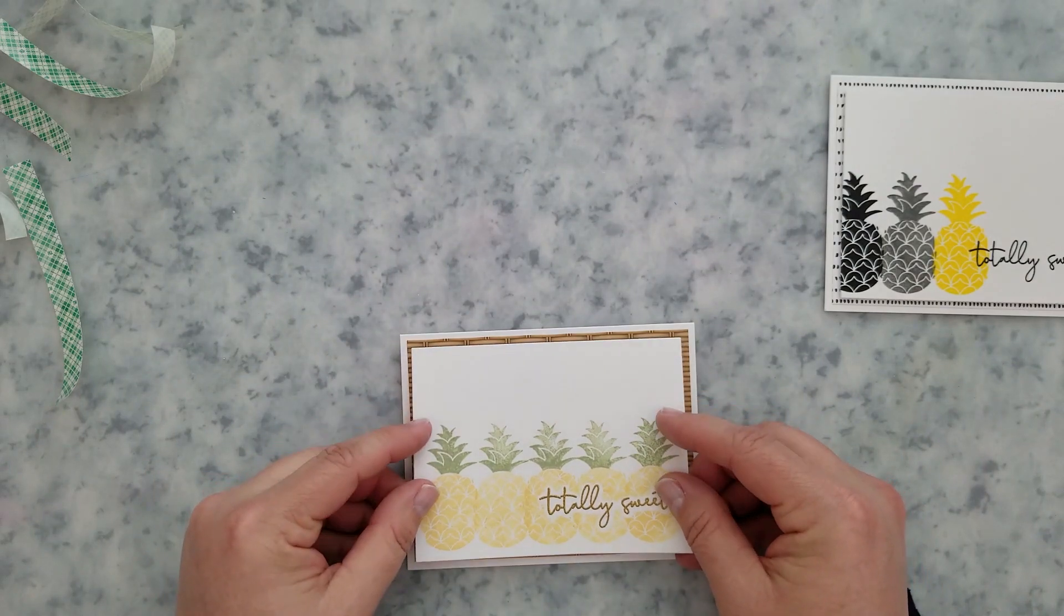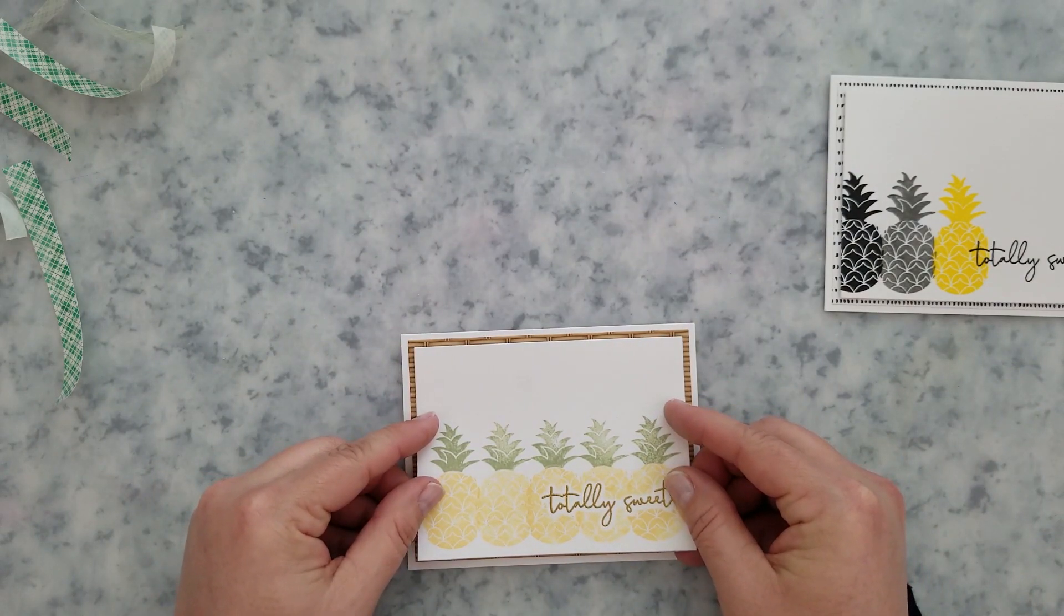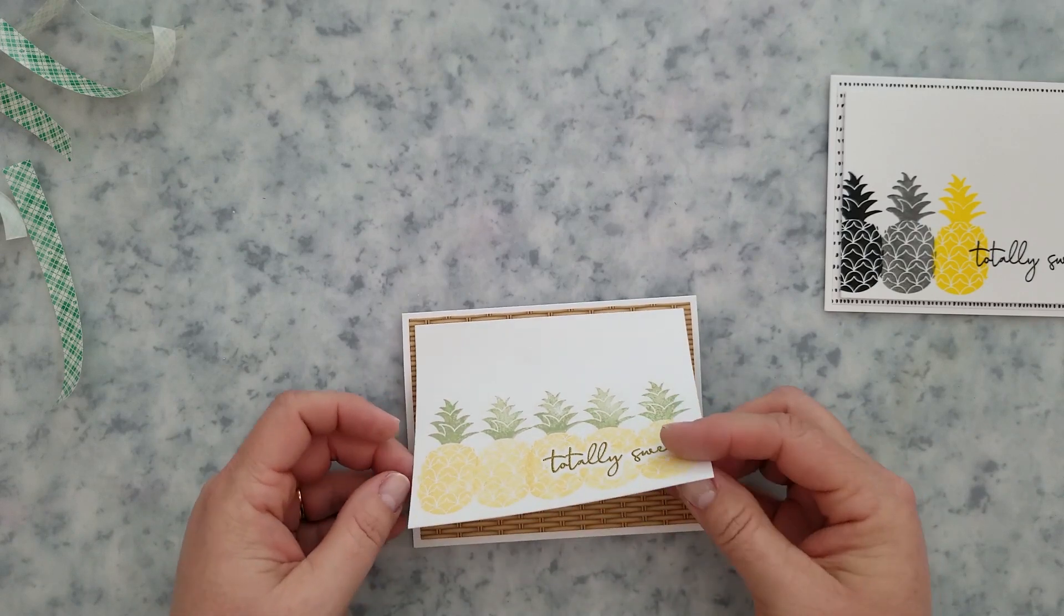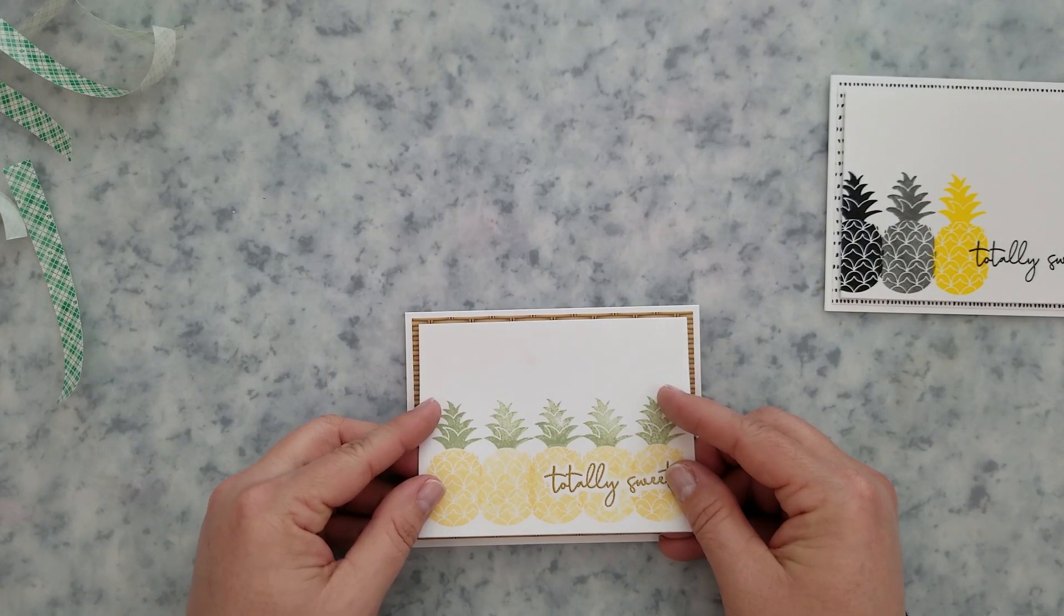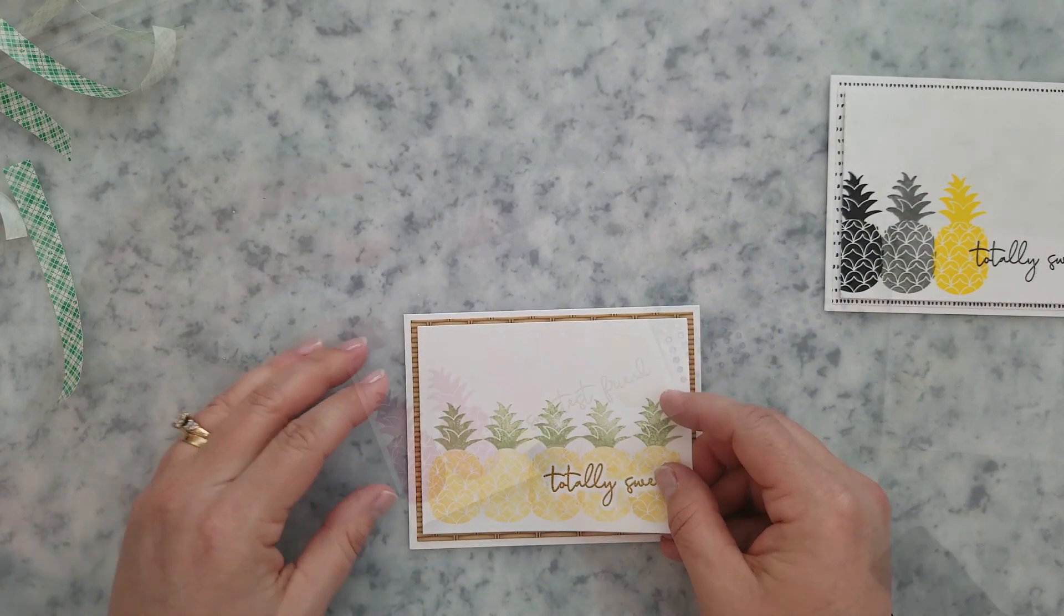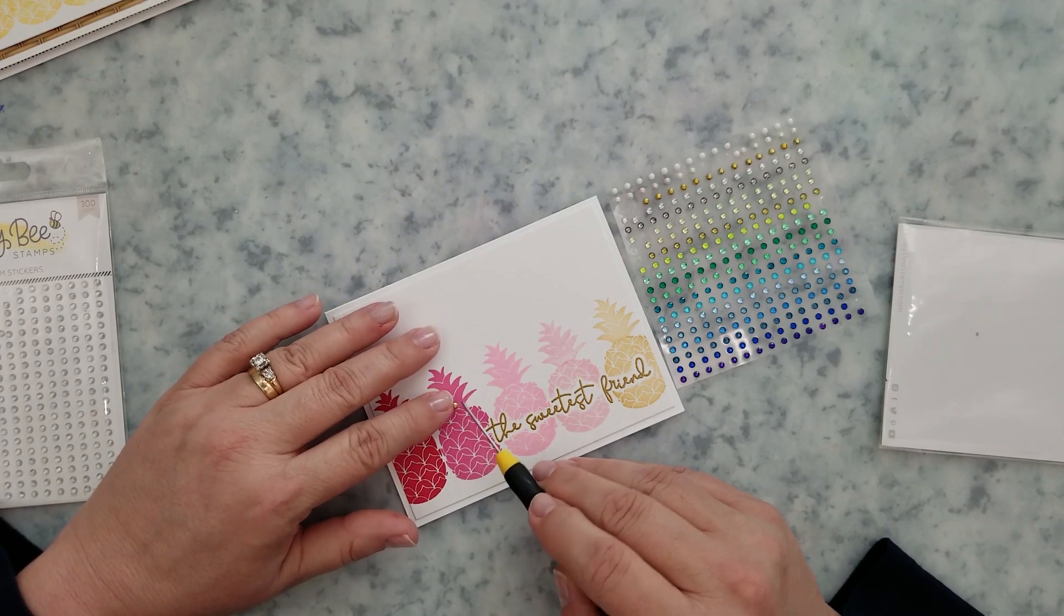So I thought, well I really want to add something more to these, so I'm going to be using the little gem stickers from Honeybee Stamps. I am quickly becoming addicted to these little gem stickers. I love these things. They add such a really neat touch to your card, and it's not so much. They're tiny and it's just enough. I love them.